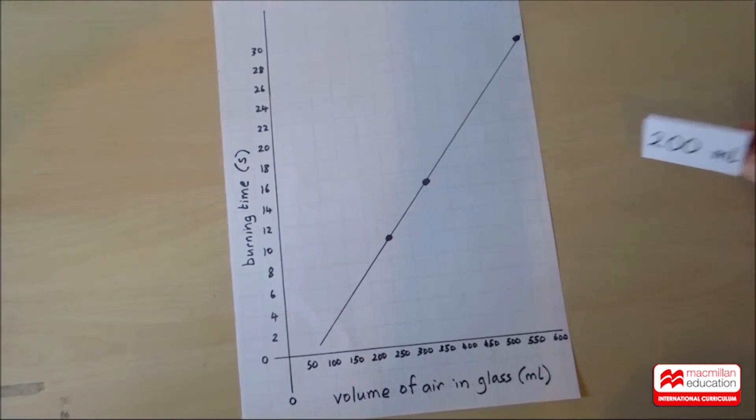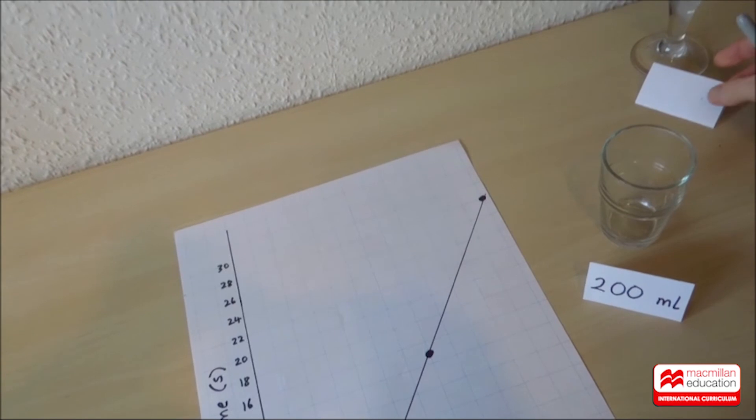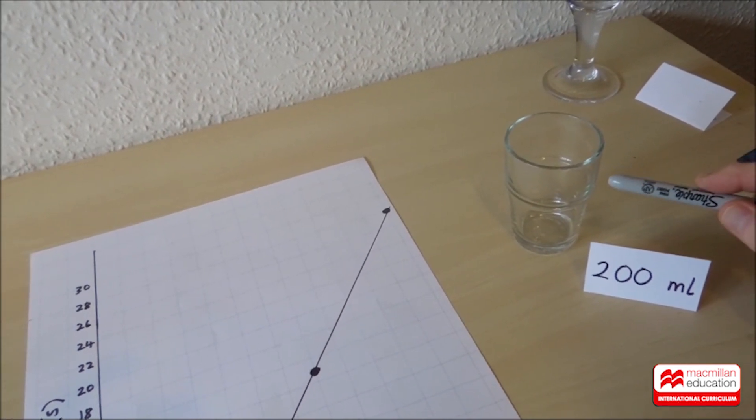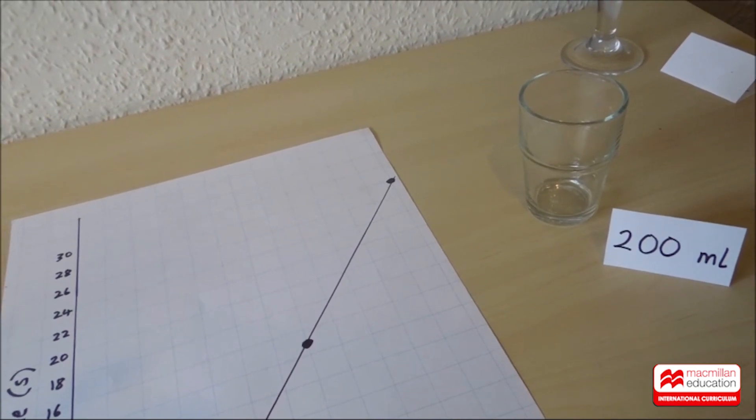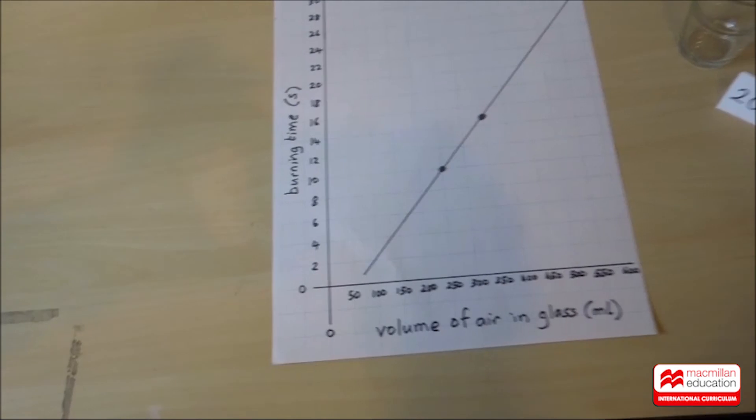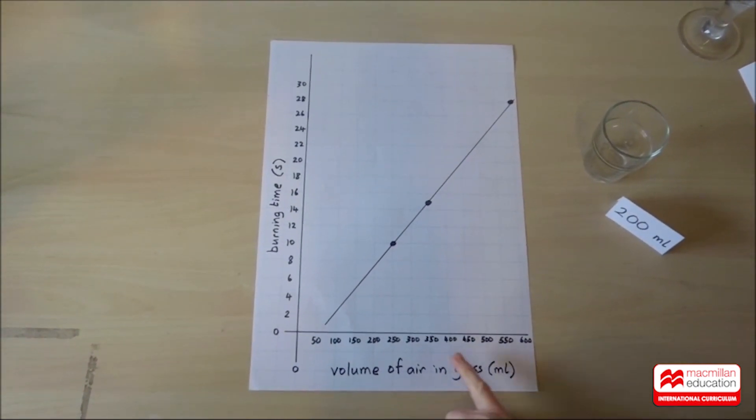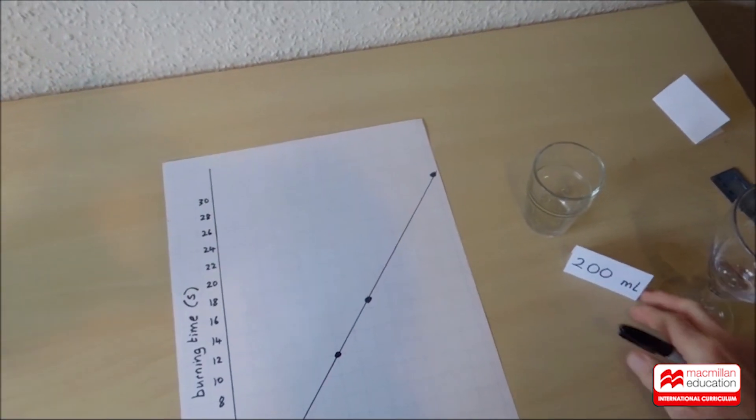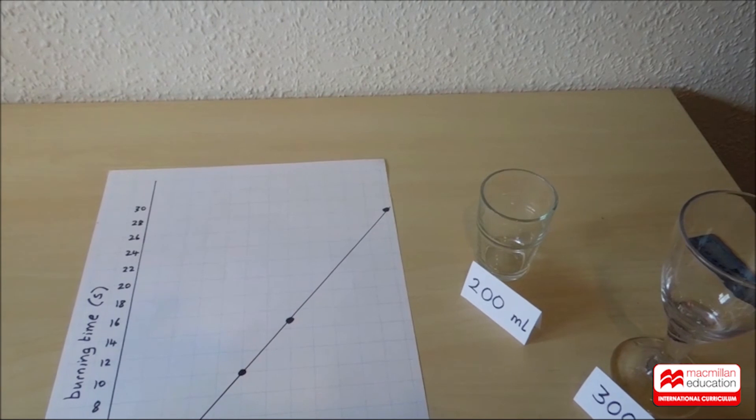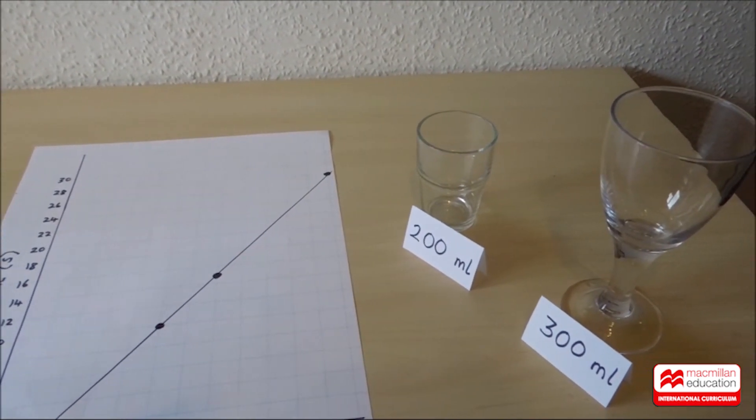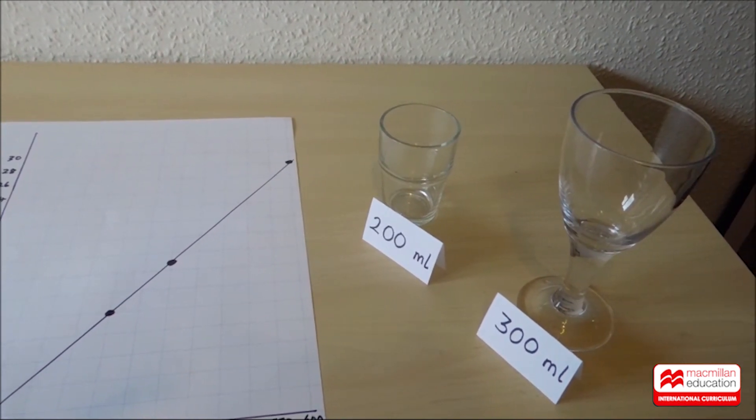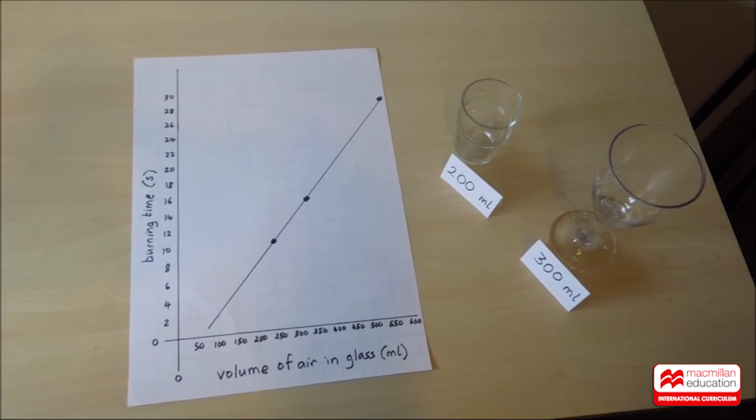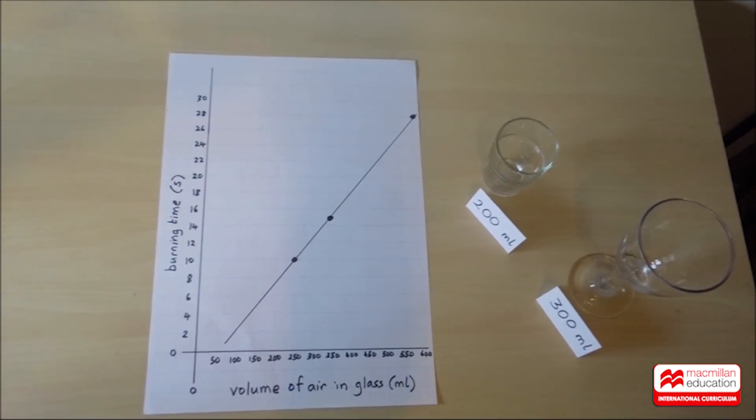And here's your challenge. I have a glass here, and the volume I've measured to be 200 mils. And if I put this glass over our candle, how long would the candle burn for using our graph? 200 mils, how long would the burning candle last? That's a challenge for you. And I've got another glass here, which is even bigger. And I measured this volume to be 300 mils. Can you use the graph to predict how long the candle will burn for if I used this glass? Use the graph. Over to you, scientists.